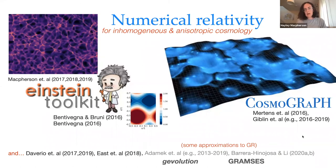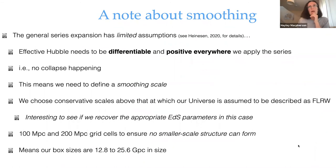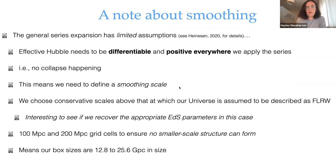We use a code called the Einstein Toolkit, a free open-source numerical relativity code, with a module called FLRW Solver to generate realistic cosmological initial conditions, evolved using full numerical relativity routines. A note about smoothing: in Esther's series expansion, the effective Hubble parameter needs to be differentiable and positive everywhere, meaning no collapse can occur. We therefore define a smoothing scale by choosing large grid cells — two simulations, one with 100 megaparsec grid cells and another with 200 megaparsec — ensuring no small-scale nonlinear dynamics and meeting the requirements for the series expansion.